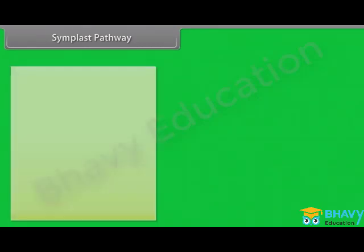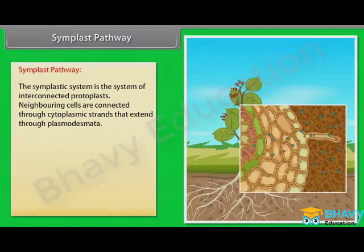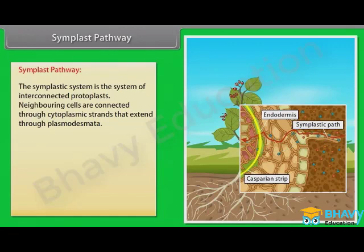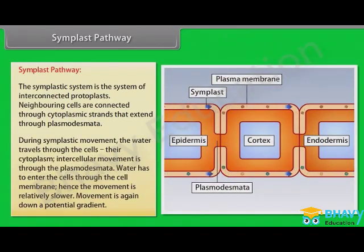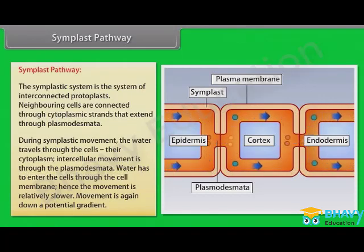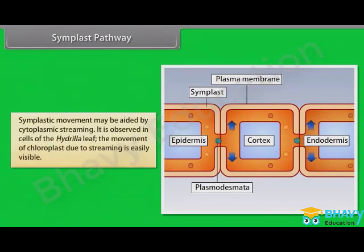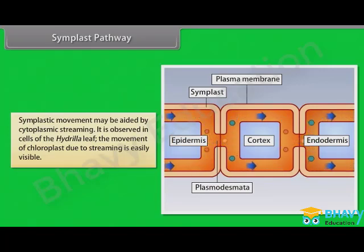The other pathway is the symplast pathway. The symplastic system is the system of interconnected protoplasts. Neighboring cells are connected through cytoplasmic strands that extend through plasmodesmata. During symplastic movement, water travels through the cells and their cytoplasm. Intercellular movement is through the plasmodesmata. Water has to enter the cells through the cell membrane, hence the movement is relatively slower. Movement is again down a potential gradient. Symplastic movement may be aided by cytoplasmic streaming, which is observable in cells of the hydrilla leaf.